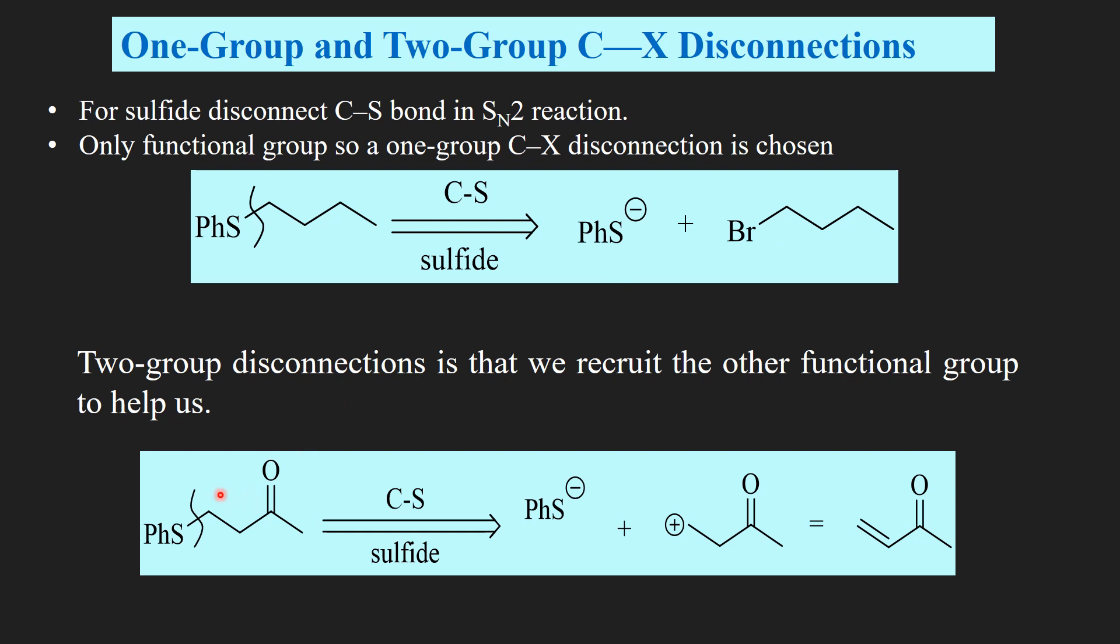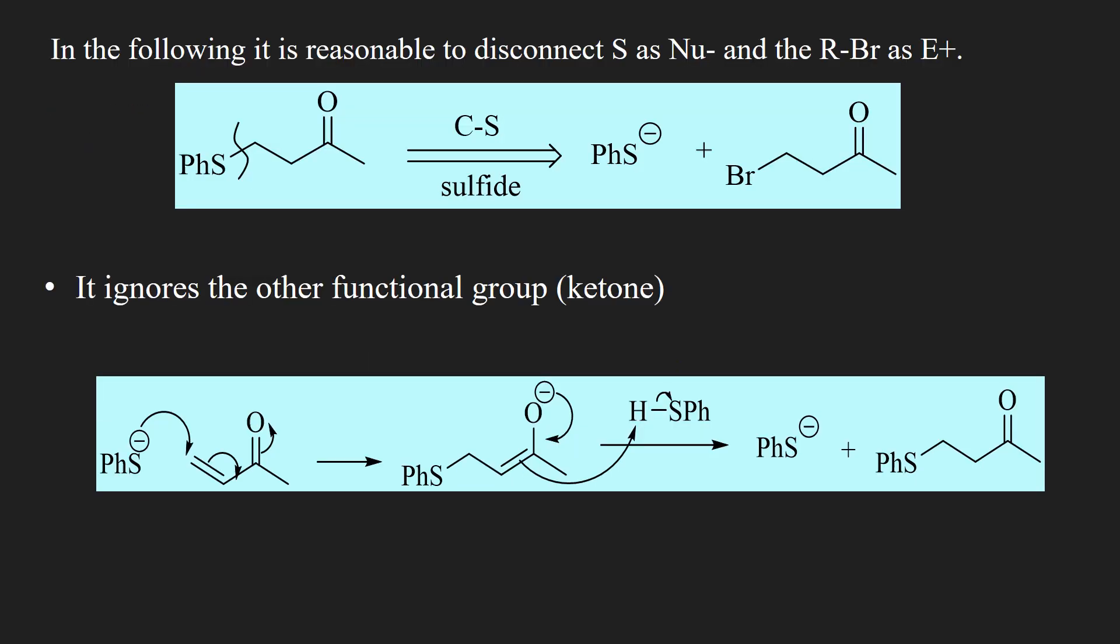If the sulfide is of this structure, then there is a two-group C-X disconnection. Apparently it seems the same as one-group C-X disconnection, but here the region equivalent to a synthon shows that it is a two-group C-X disconnection. In two-group C-X disconnection, we recruit another functional group which helps us to discover a better reagent. Here the carbonyl group can make the center electrophilic. If we simply add a double bond to the structure, in two-group disconnection there are two functional groups which participate in a reaction.